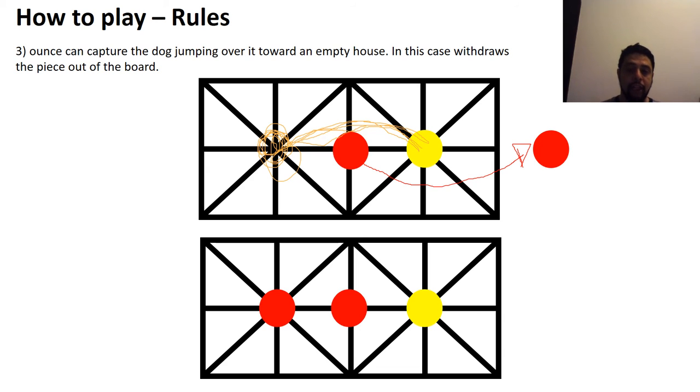In this other condition, this house is full. It's not empty house. So the ounce can't jump because all the movements, all the destinations need to be empty for the piece to occupy. In this case, I am playing with the ounce. I can't jump over it. I can't capture it. I can go here, here, here, here. But in this case, I can't capture this dog.